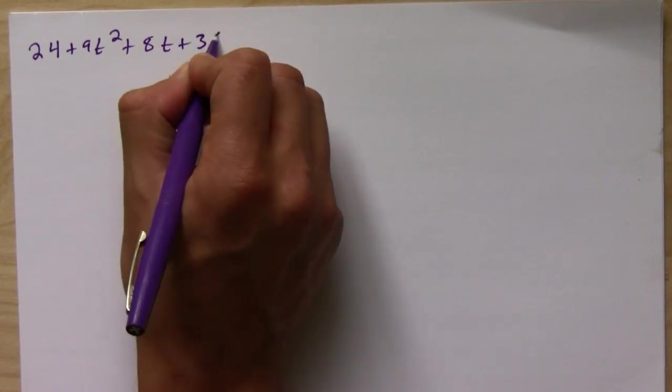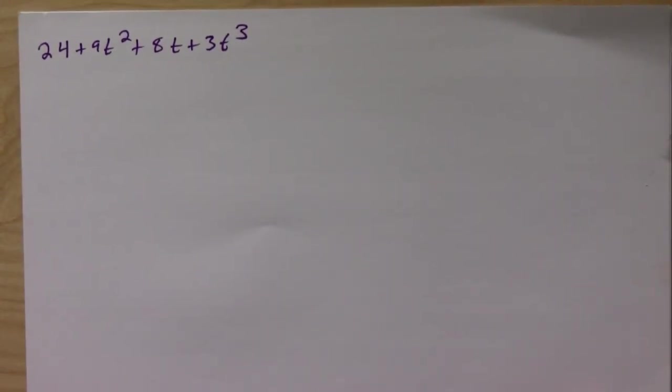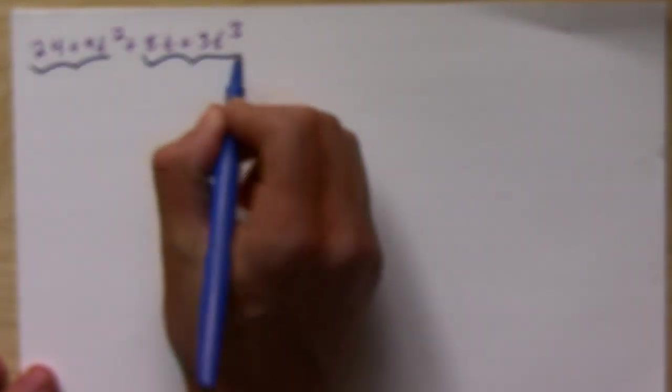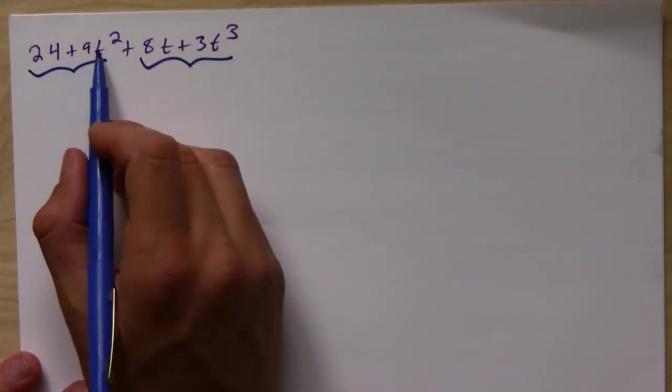So now let's do one with four terms real quick, just so that you guys remember. Let's say I want to factor something like 24 plus 9t squared plus 8t plus 3t cubed. Okay, so again, as always, you first look for anything in common between all these. There isn't anything. So since there are four terms, then that means we're going to factor by grouping. So we grab these two, we group them up, and we take out the greatest common factor between them.